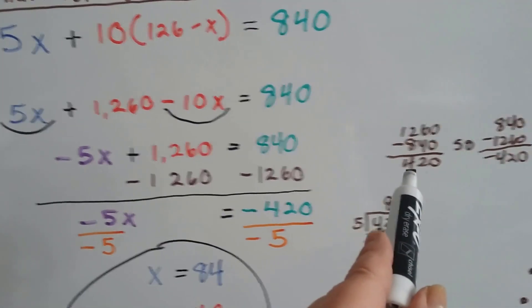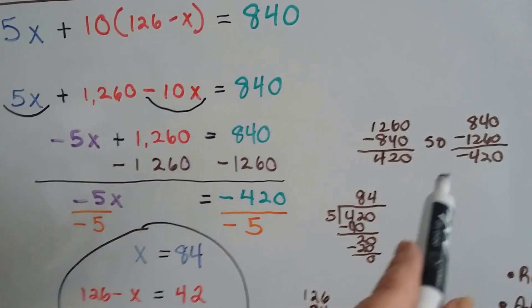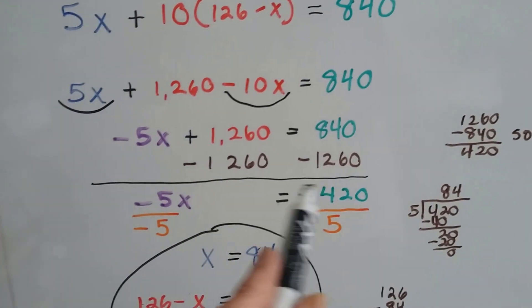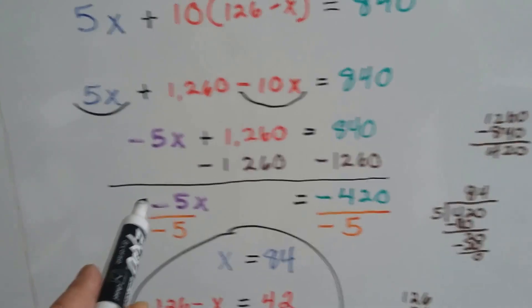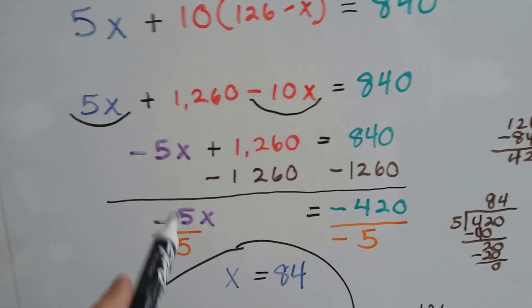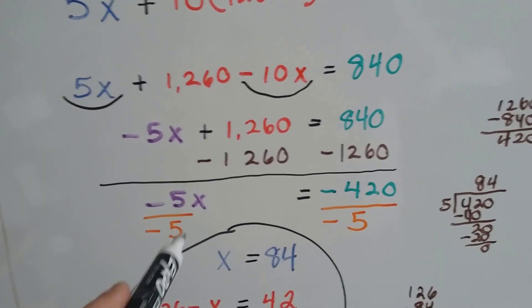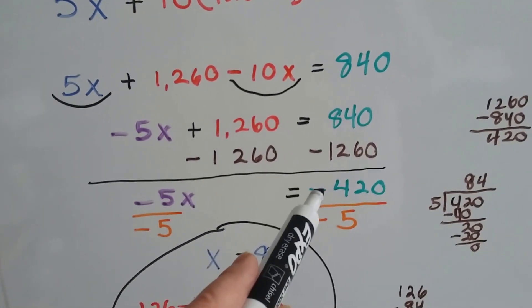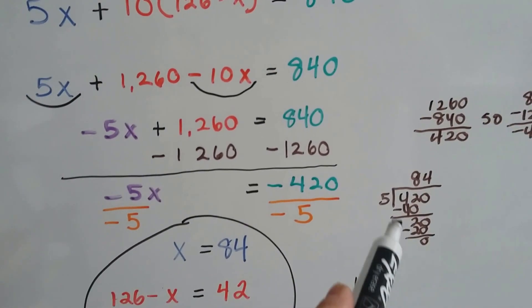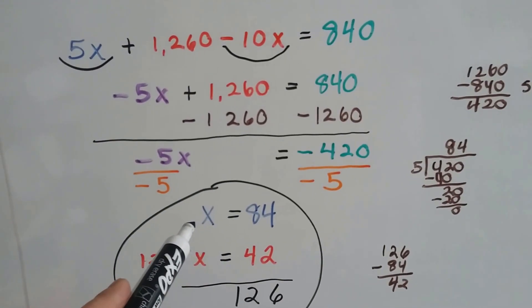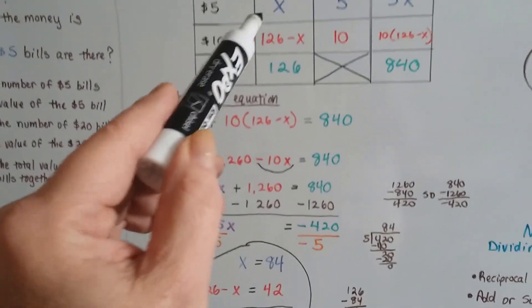Now we've got negative 420 on this side and negative 5X on this side. To isolate the X, we just divide both sides by this coefficient negative 5. A negative divided by a negative makes a positive. We have a positive X here. And this negative 420 divided by negative 5 makes a positive 84. We know that there are 84 $5 bills. X equals 84.